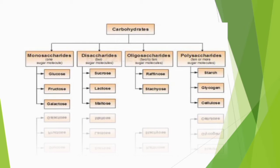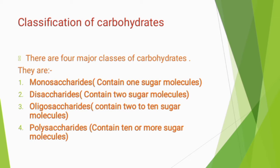Here we can see the classification of carbohydrates based on the number of sugar molecules present. There are four major classes: monosaccharides, disaccharides, oligosaccharides, and polysaccharides. Monosaccharides contain 1 sugar molecule, disaccharides contain 2, oligosaccharides contain 2 to 10, and polysaccharides contain 10 or more sugar molecules.